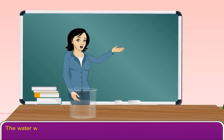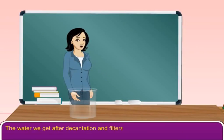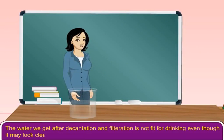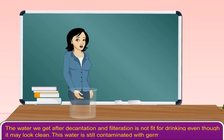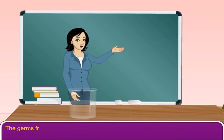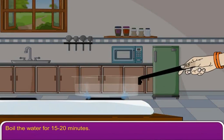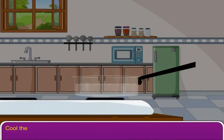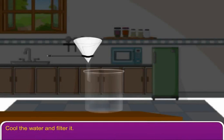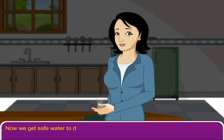The water we get after decantation and filtration is not fit for drinking, even though it may look clean. This water is still contaminated with germs that we cannot see. The germs from this water can be removed by boiling. Boil the water for 15 to 20 minutes, then cool the water and filter it. Now we get safe water to drink.